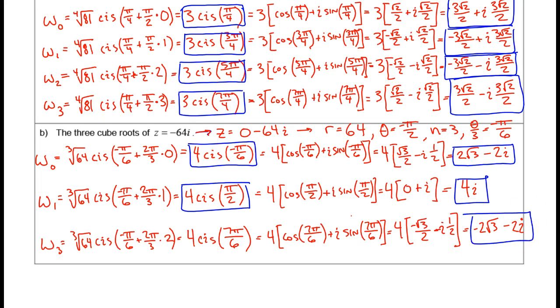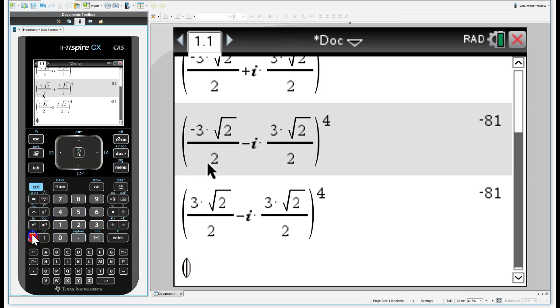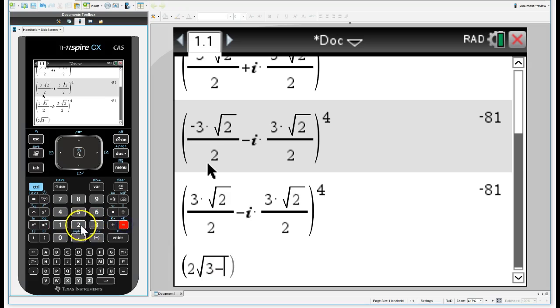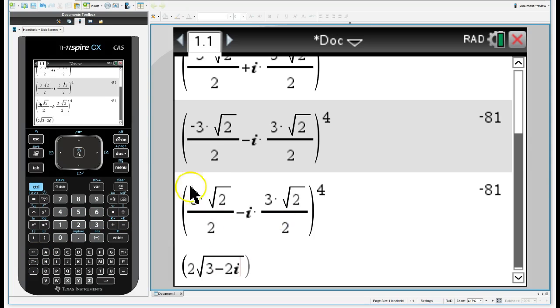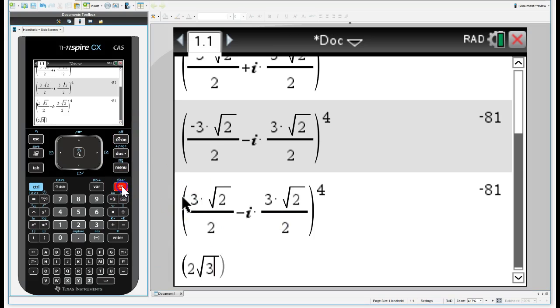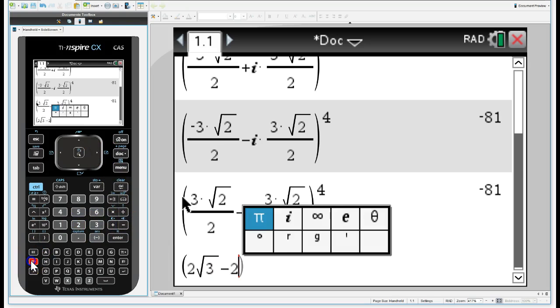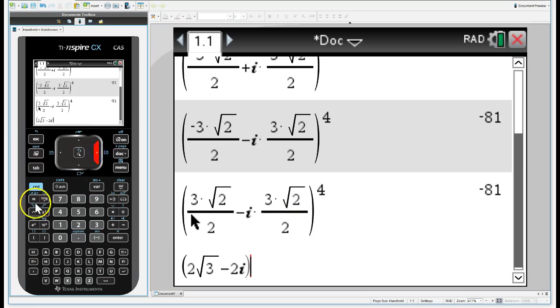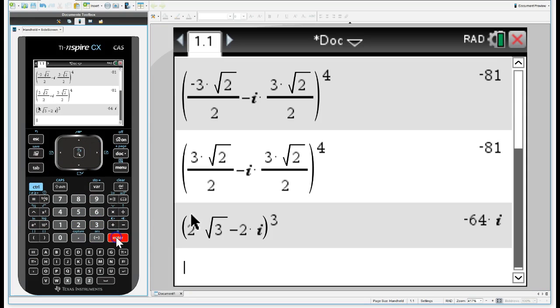There you have it, folks. I have found three cube roots of negative 64i. Let's just check a couple of these, see what the calculator says. I should be able to take this number and cube it and get negative 64i. So that first one is 2 root 3 minus 2i. Let's try that. I have 2 times the square root of 3 minus 2i. And again, it's a cube root. So if I raise that to the third power, I should get, there it is, negative 64i. Hey, it works. That's pretty cool.